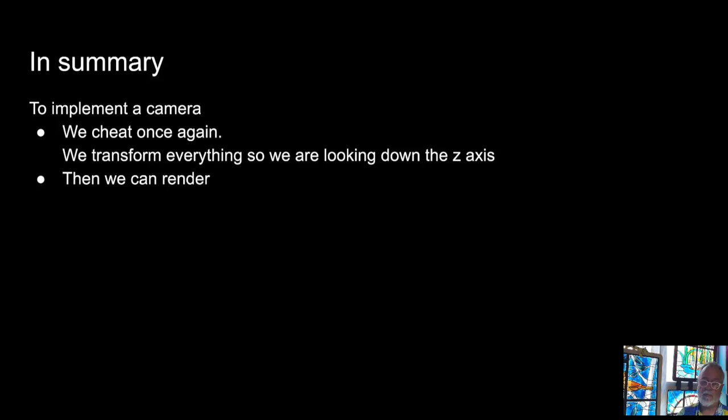So in summary, in order to implement a camera, we cheat once again. We've transformed everything. So we're looking down the z-axis. We then do a transformation. Either if it's an orthogonal, we just drop all the z's. And if it's perspective, we do that weird matrix multiplication such that we divide through by z using homogeneous coordinates. And then there you go. So you can render your image. I'll see you in the next video on texture mapping.